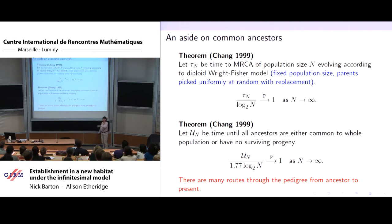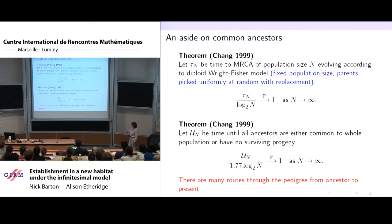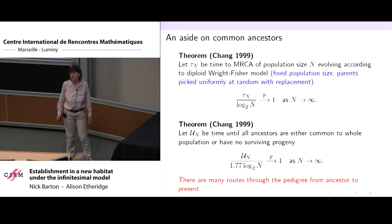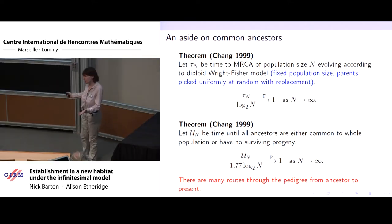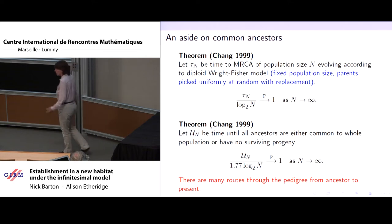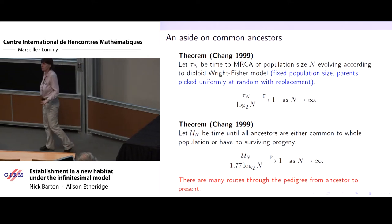This is in sharp contrast to classical population genetics. The appropriate timescale for a Kingman coalescent is n generations — it takes n generations to decide when two individuals had their most recent common gene at a particular locus. The reason the pedigree and genetic ancestry are so different is that there are many routes through the pedigree from ancestor to present, and there's no reason why any particular ancestor has actually contributed any genetic material.